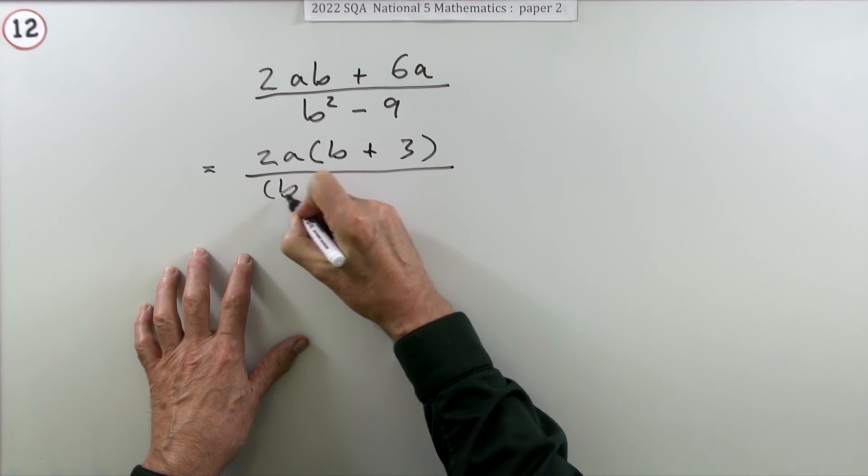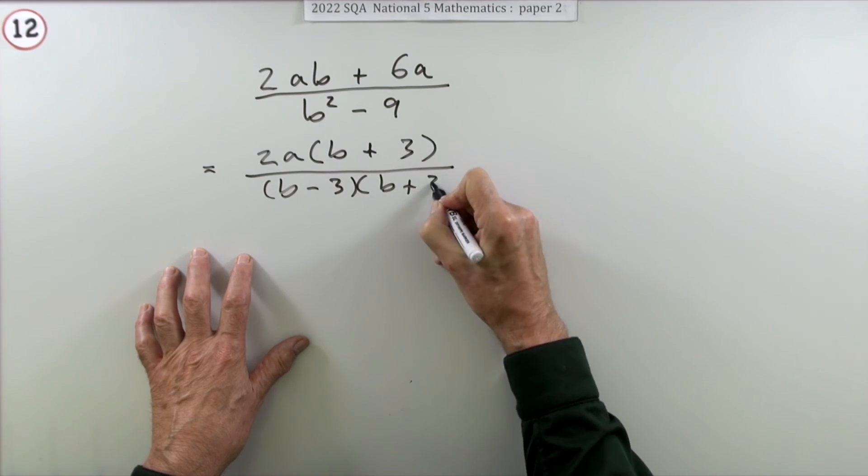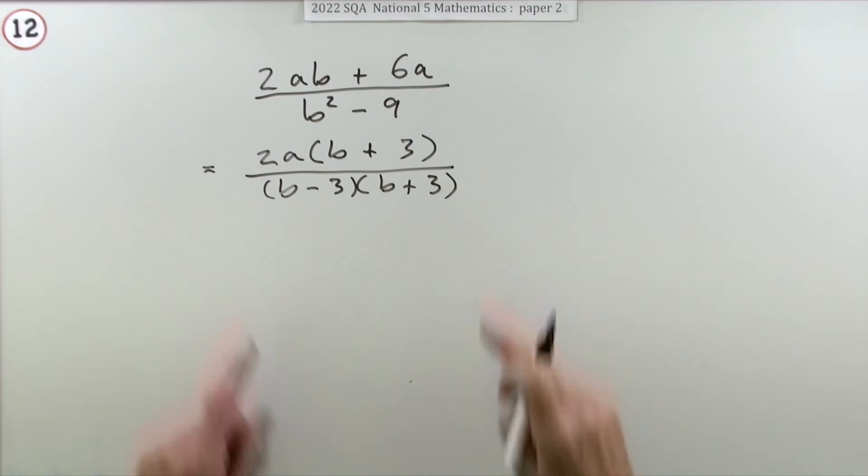Now the bottom: b squared minus 9. Well, that's the difference of two squares: (b - 3)(b + 3). Those will be the first two marks—one for factorizing the top, one for factorizing the denominator.